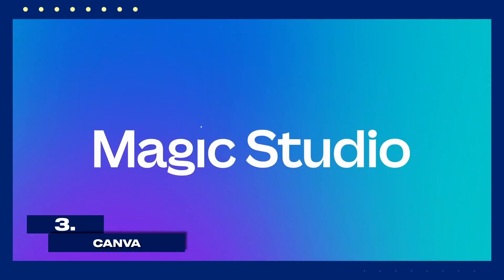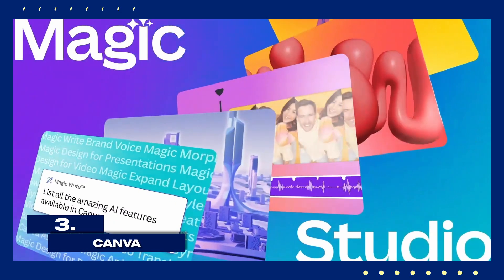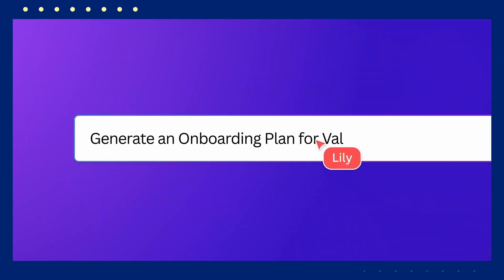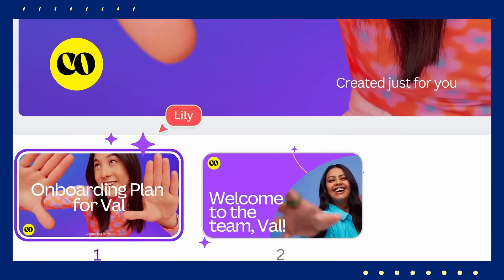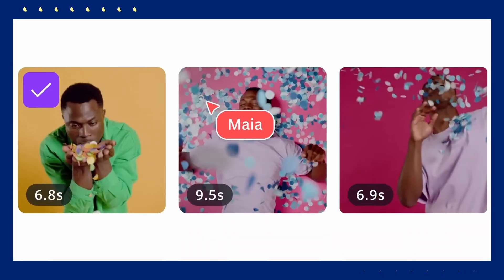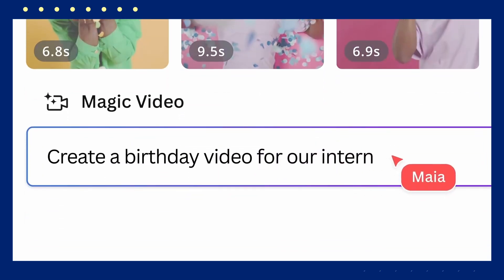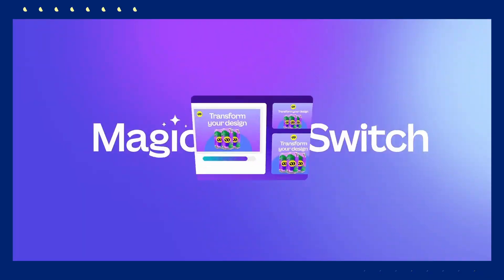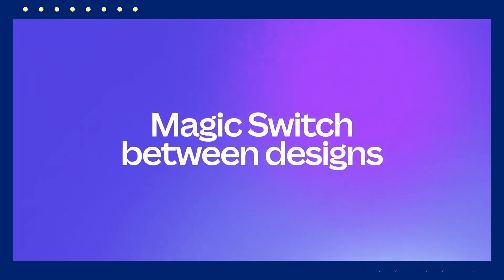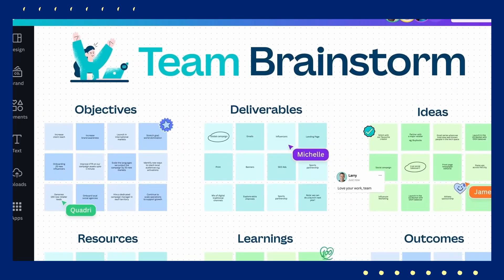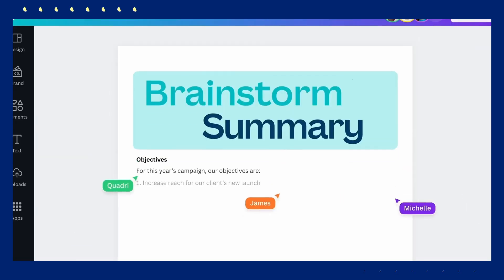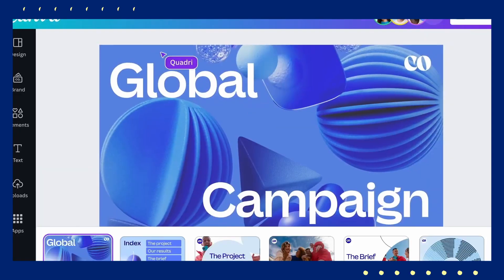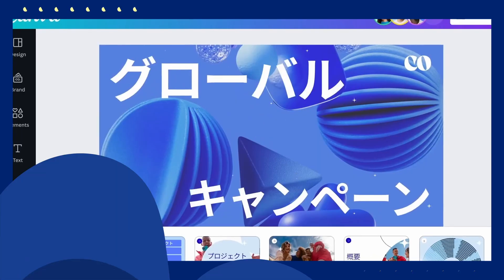We have Canva. Canva combines AI technology with an intuitive design interface to help you create everything from social media posts to presentations. With its drag-and-drop functionality and a vast library of templates and design elements, Canva simplifies the design process. You don't need any design background to produce professional-looking graphics in just a few clicks.